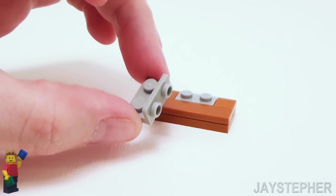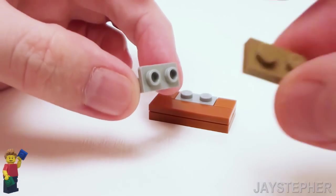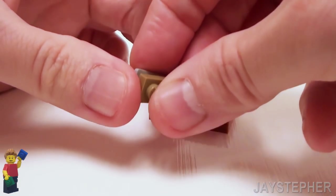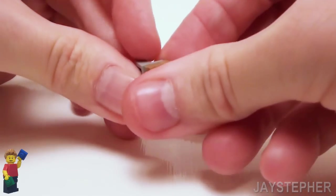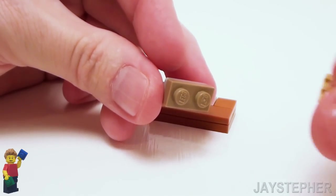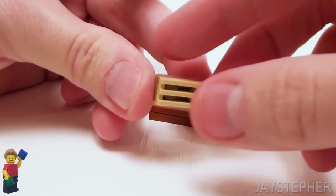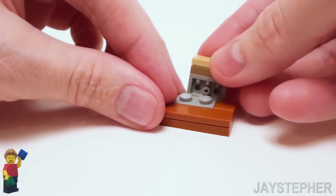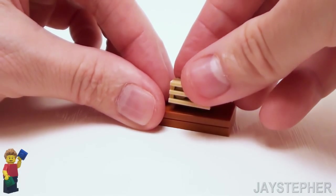Now take a 1 by 2 by 1 by 2 angle plate. Place a 1 by 2 plate on the front of the angle plate, followed by a 1 by 2 radiator grill. Let's place this assembly on top of the 1 by 2 plate.